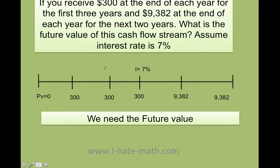Alright, so how do we do this problem? Very easy. First, you need to make sure you have your timeline. Remember, you are receiving it at the end of each year. You're going to be having $300 the first three years and then year number four, you're going to be getting $9,382 and finally again $9,382.